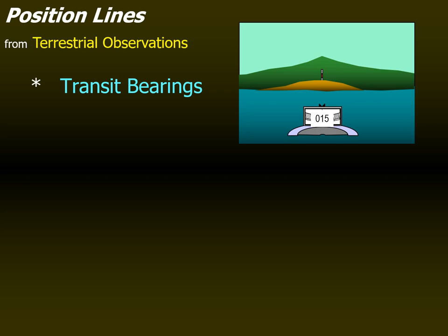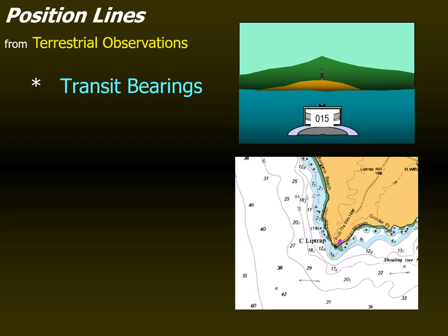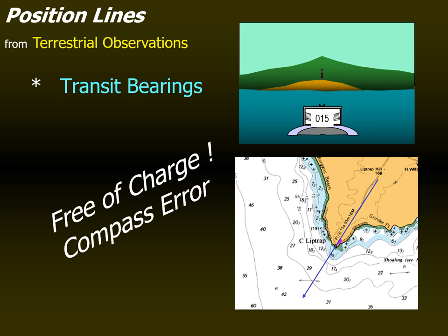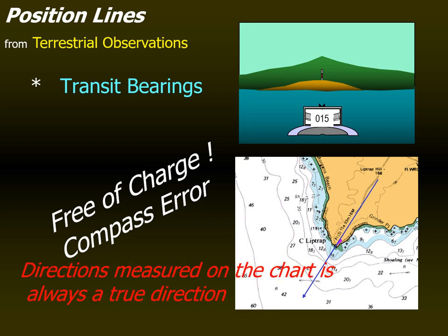Now let's talk about transit bearings. Two objects are described as being in transit when they can be seen in a direct line with each other. As you can see in the picture, because we can align a ruler on the chart between the objects, a line can be drawn on the chart and used as a position line. The use of transits as leading marks or stern marks is convenient to the navigator, especially when running in for an anchorage, pilotage in confined waters, and approaches to harbor. It is also a powerful method of determining your gyro or magnetic compass error, as you can compare the true transit bearing from the chart with the transit bearing observed using the gyro compass to obtain the gyro error.